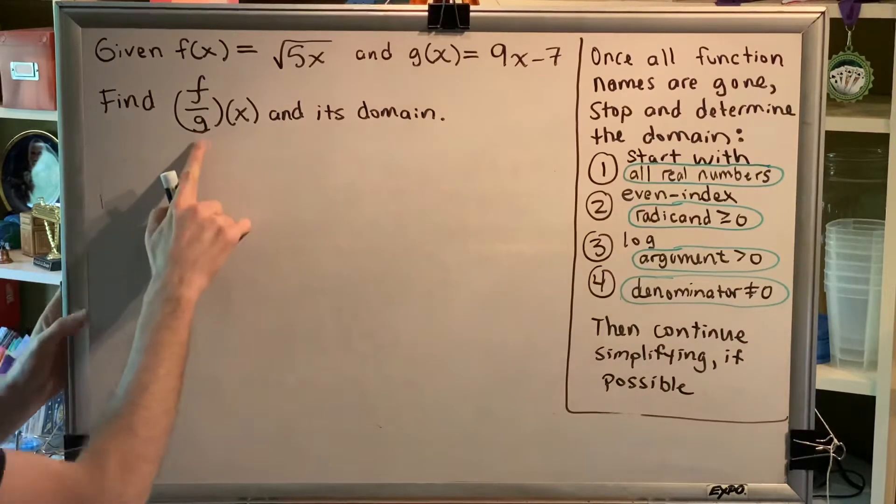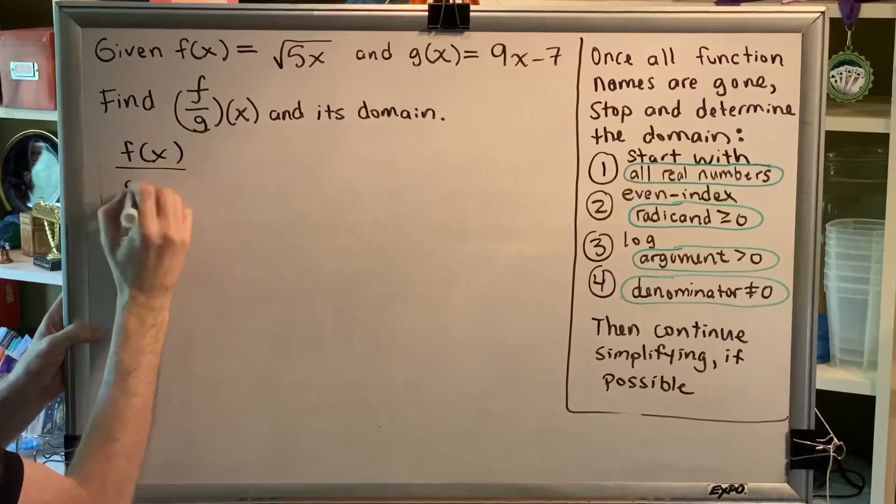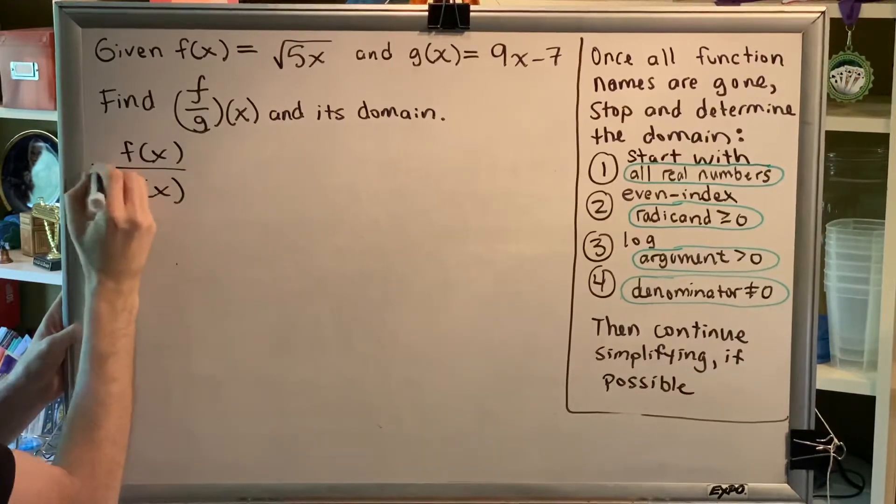Okay, so the name f over g is telling me that I should take my function f(x) and my function g(x) and I should divide them.